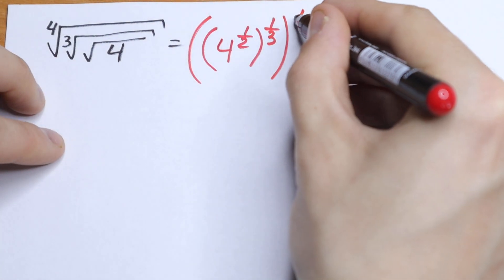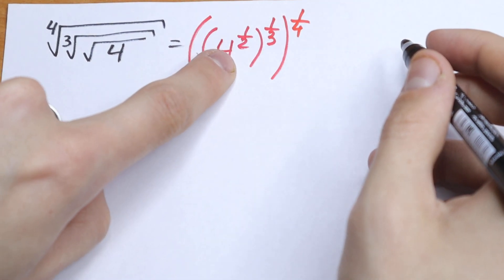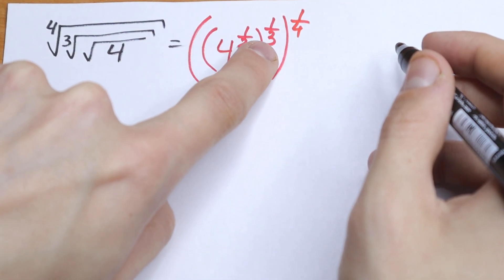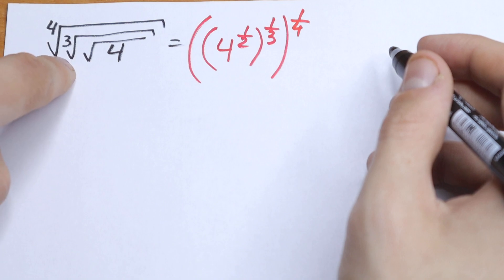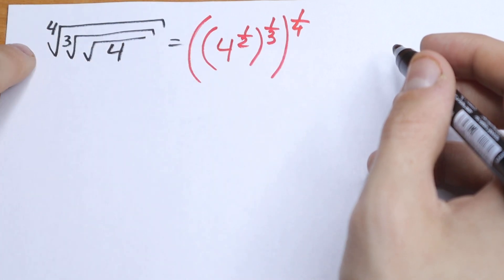Because we have three roots. So, this is our first square root, this is our one third, this is our second cube root, and one fourth is our fourth root.